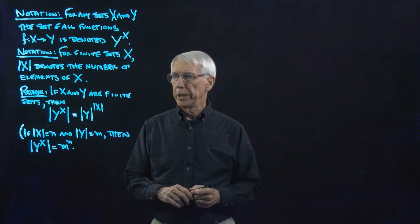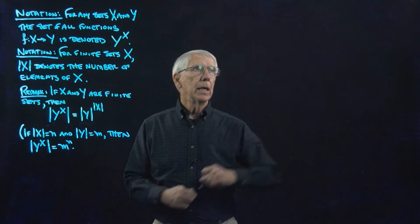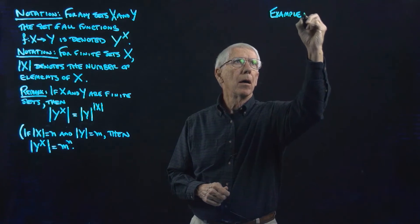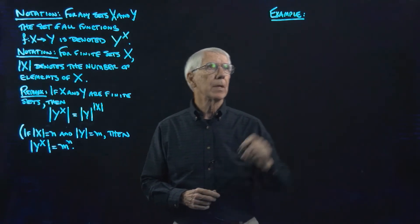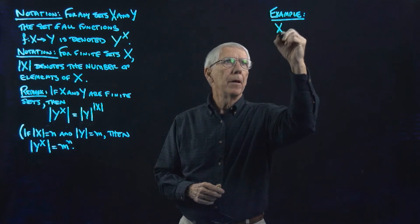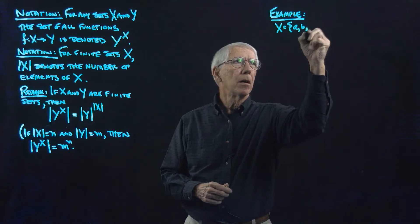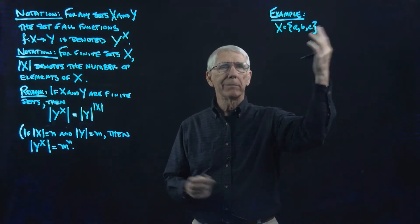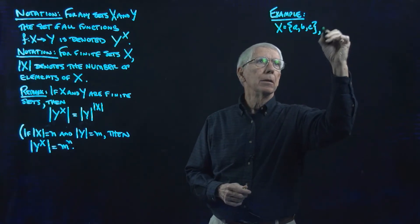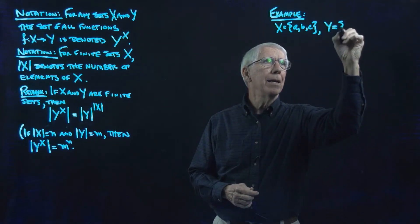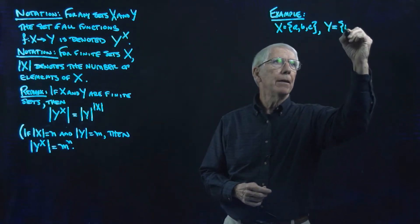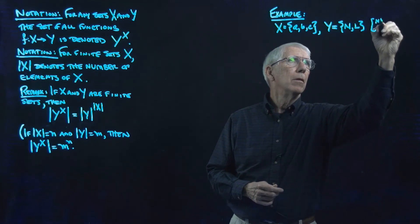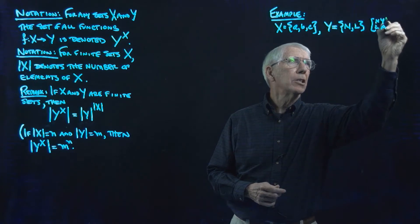Let's do a simple little example. Let x be a set of people: Amy, Bev, Kathy. Let y be a set of cities: New York and LA — so n is New York, l is Los Angeles.